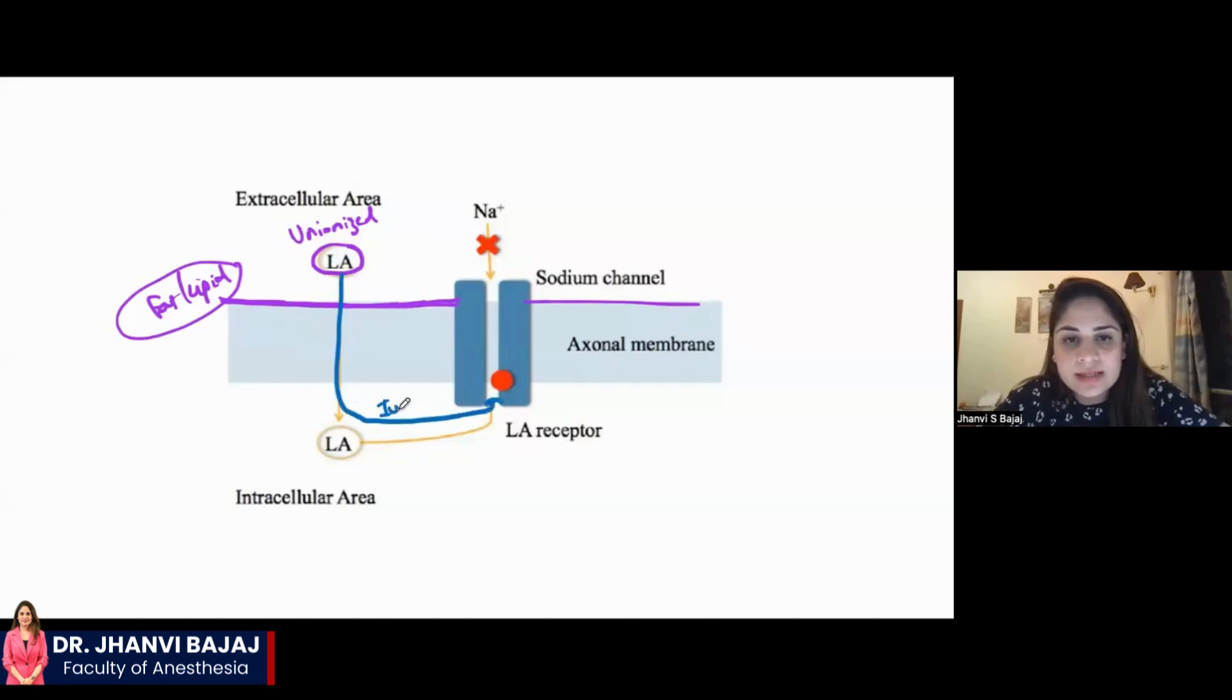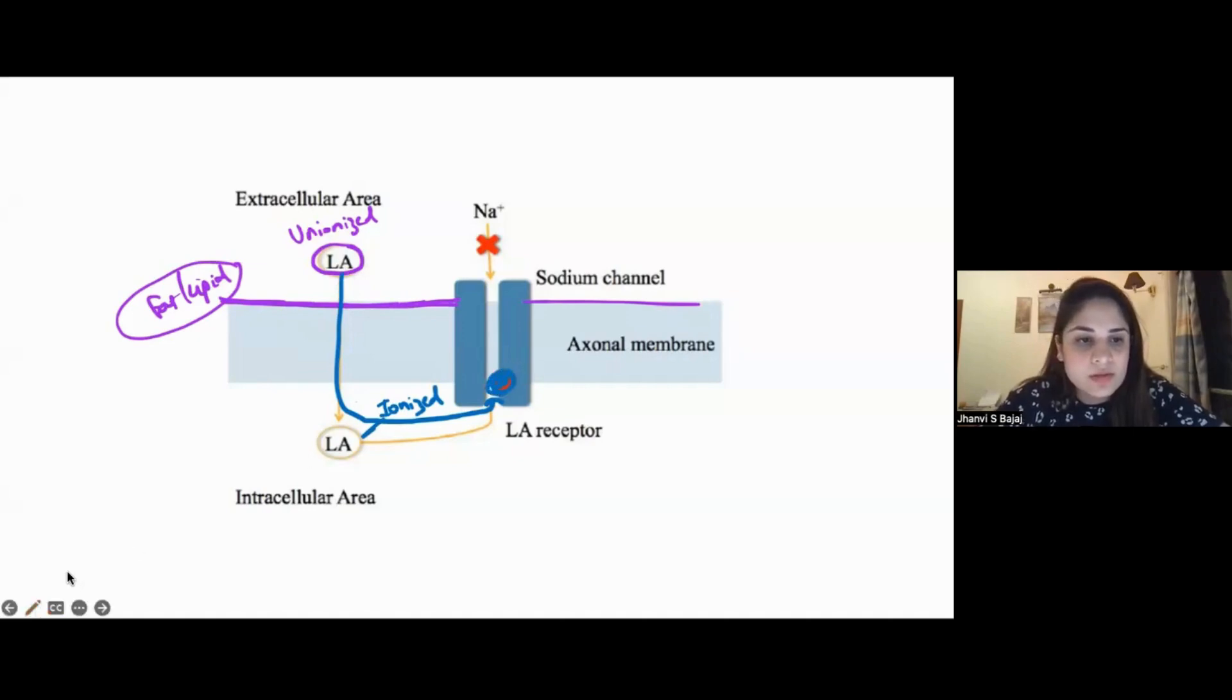And here, when they enter inside the nerve, they get ionized. Okay. Now, this ionized local anesthetic goes and blocks the sodium channel. Okay. So, it blocks the sodium channel that is present from inside.